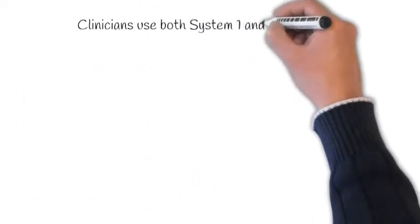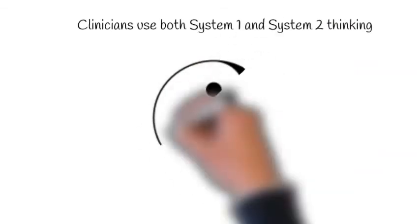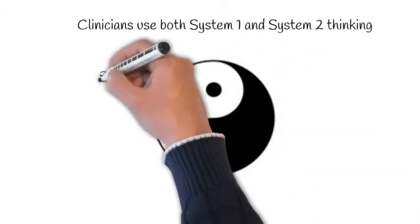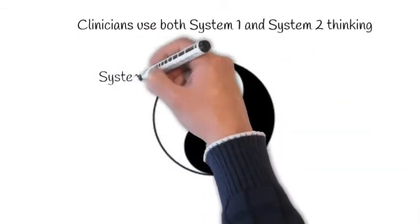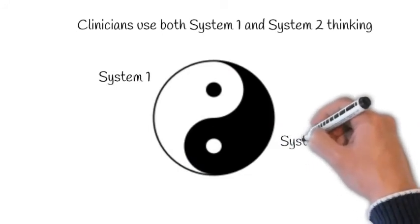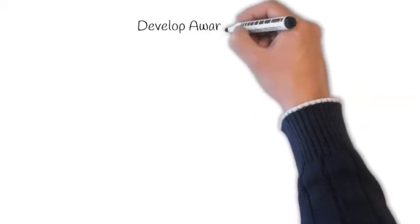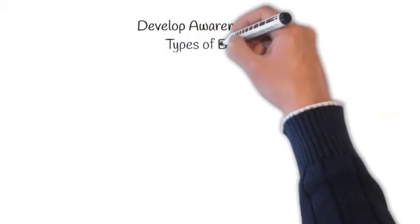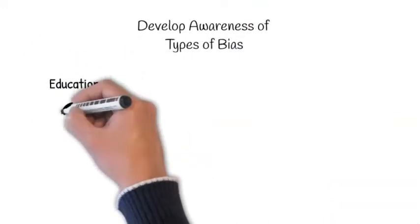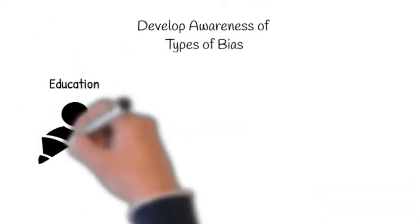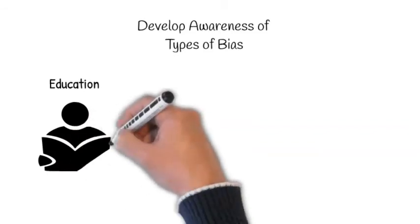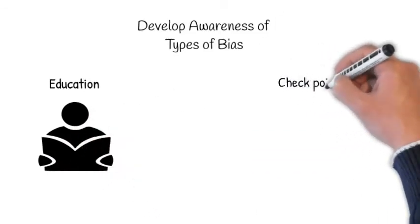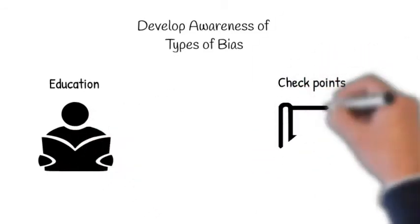As we've already discussed, both systems one and two are valuable. So how do we train ourselves to appropriately shift from system one to system two when we encounter warning signs? There are several things we can do to control for our biases. One thing is to develop an awareness of the different types of biases. Simply by educating ourselves on the many ways our minds can trick us, we become more mindful to avoid or at least recognize these mental traps. A clinical approach that includes planned bias checkpoints is recommended.